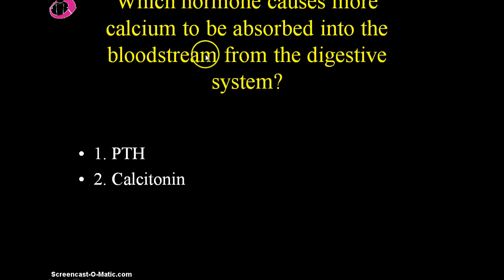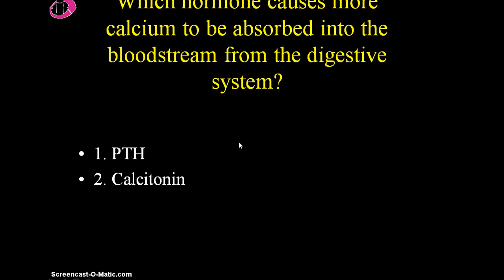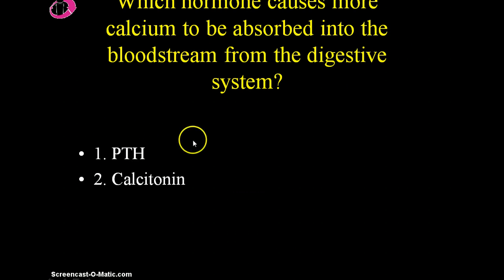The last system: which hormone causes more calcium to be absorbed into the bloodstream from the digestive system? When you eat something, it does you no good unless it gets into your bloodstream through the small intestine. The answer is parathyroid hormone, because it is secreted when blood calcium level decreases. One of the ways to bring more calcium into the bloodstream is from what you eat, so parathyroid hormone increases calcium absorption from the digestive system.